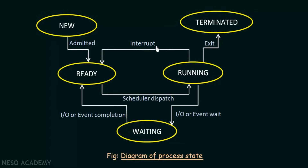The third case is when the running process needs to wait for an input/output operation or an event. At that time it goes to the waiting state, where it is waiting for the IO operation or event to occur, or perhaps a signal from somewhere. Until that is completed it stays in the waiting state. Once the IO operation or event completion occurs it goes to the ready state again — ready to be executed — and the scheduler dispatch will take it to the running state again.